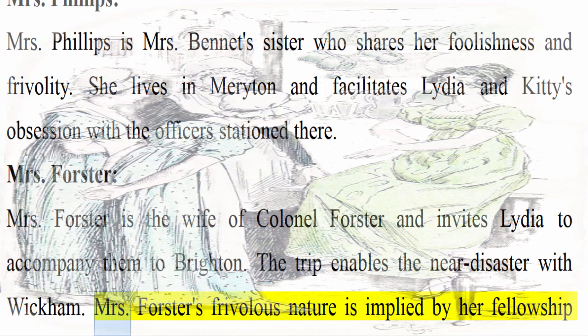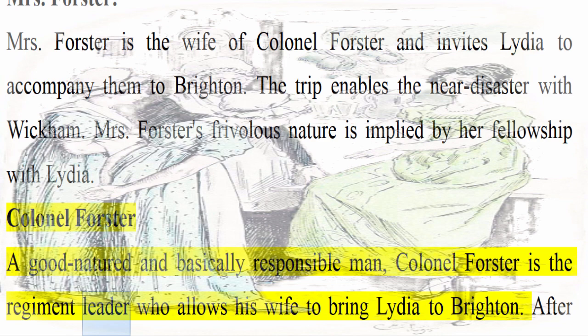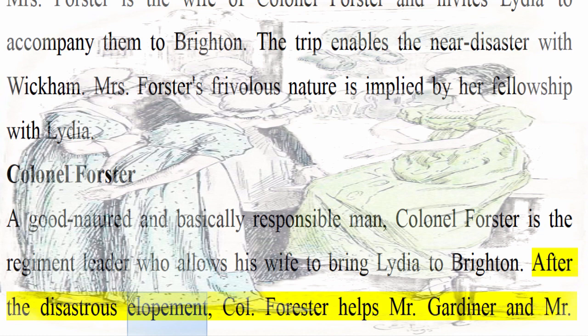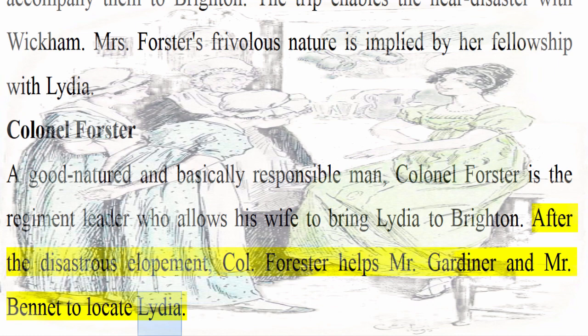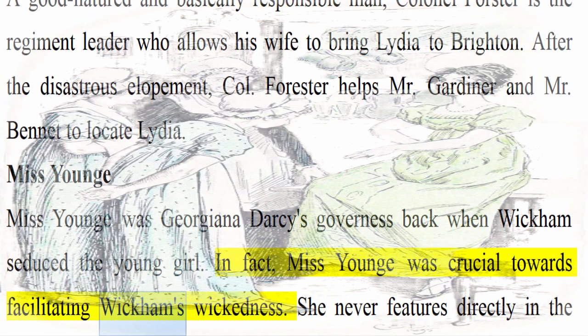Colonel Forster: A good-natured and basically responsible man, Colonel Forster is the regiment leader who allows his wife to bring Lydia to Brighton. After the disastrous elopement, Colonel Forster helps Mr. Gardiner and Mr. Bennet to locate Lydia. Miss Young was Georgiana Darcy's governess back when Wickham seduced the young girl. In fact, Miss Young was crucial towards facilitating Wickham's wickedness. She never features directly in the novel, but she proves to be the key in Darcy's locating Wickham and Lydia.